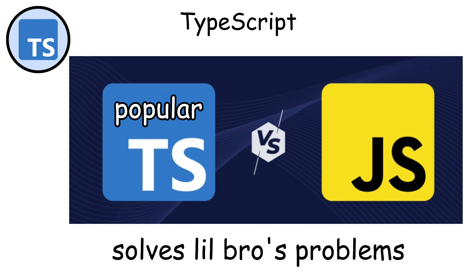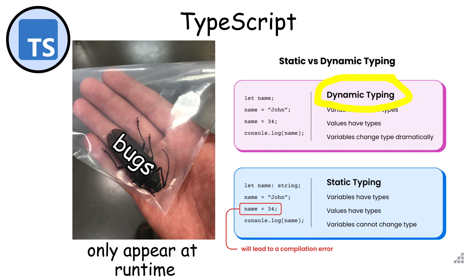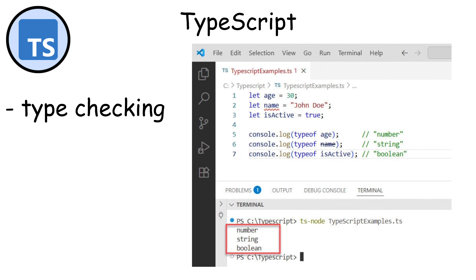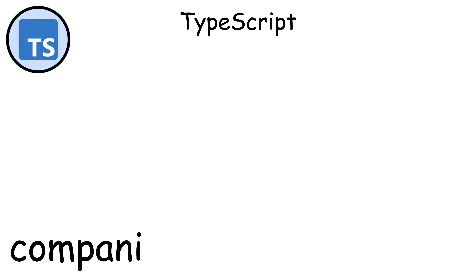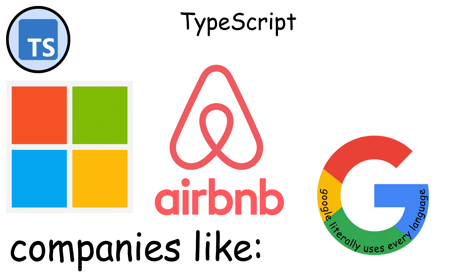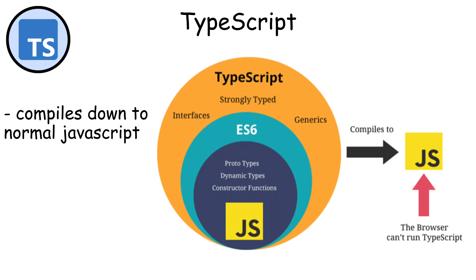What makes TypeScript popular is that it solves many of JavaScript's biggest problems. JavaScript is dynamically typed, which can lead to bugs that only appear at runtime. TypeScript adds type checking, so you catch errors during development rather than in production. Companies like Microsoft, Google, Airbnb, and Slack all use TypeScript heavily.